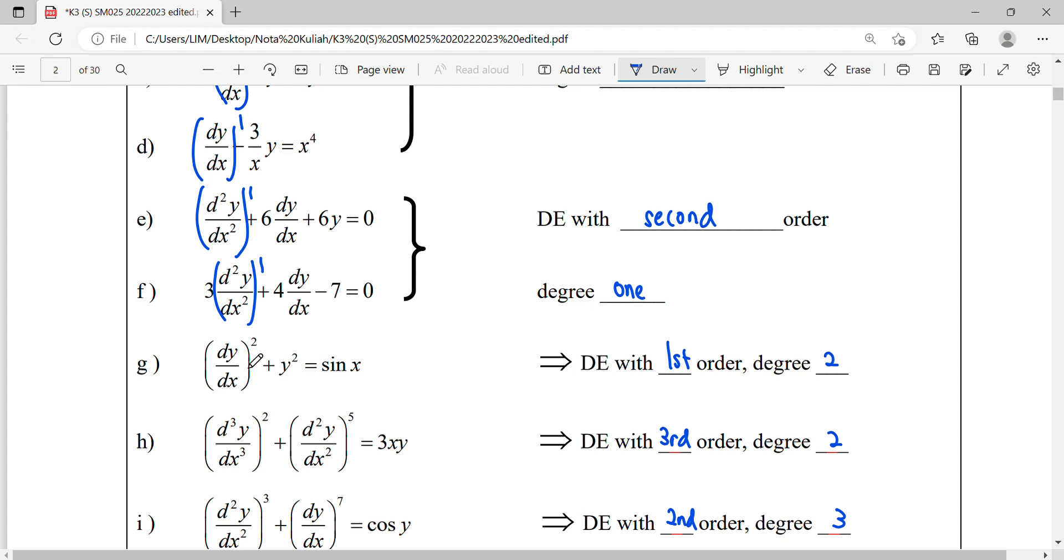For example g here, you can see this is first order, first derivative means, but degree is up to power two already, so degree two. For this, this is third derivative means third order differential equation with third order power degree two.